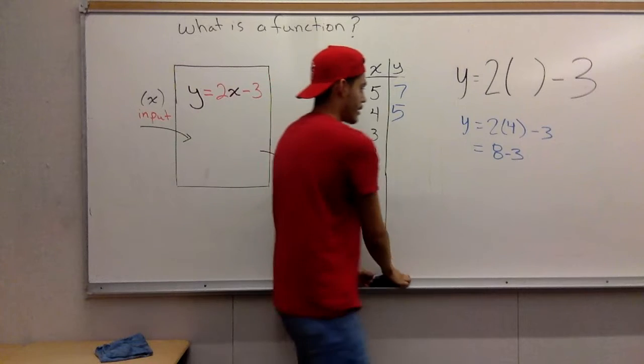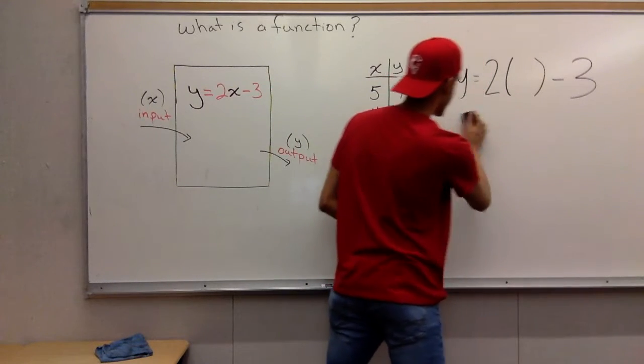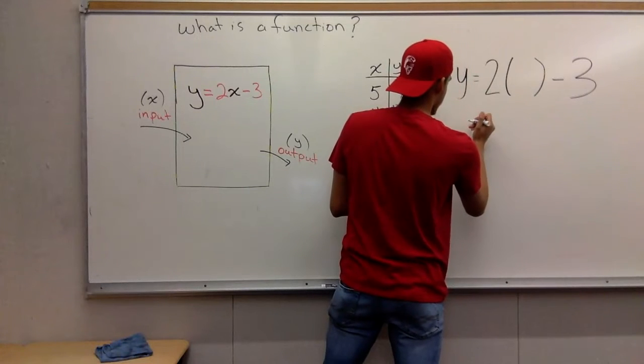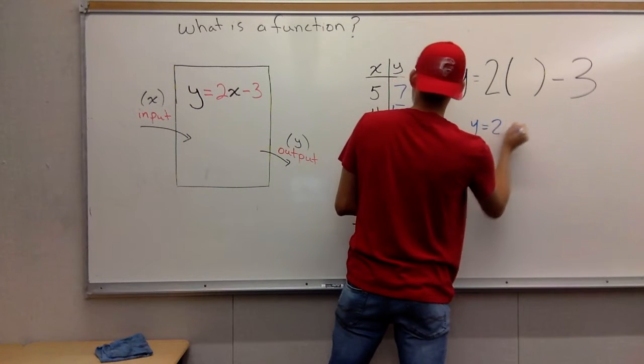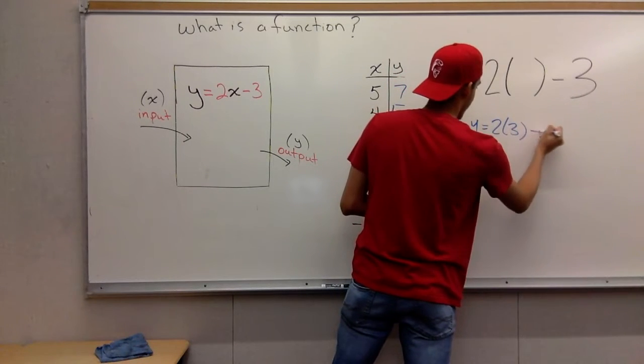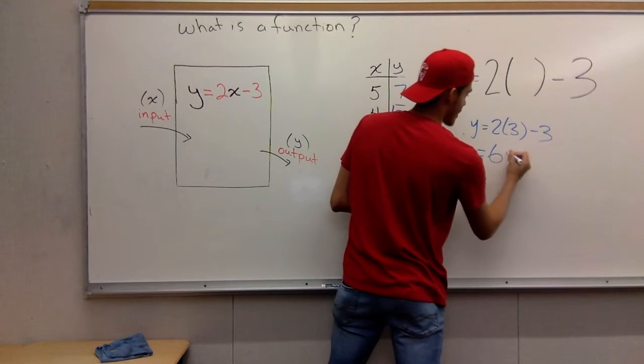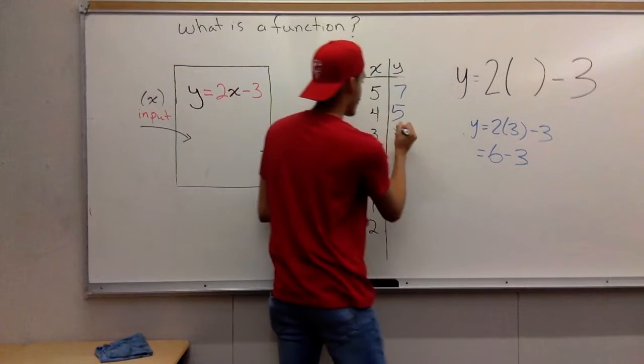All right. Now the next one, the next one is 3 right here. You have Y equals 2 times 3 minus 3. You get 2 times 3 is going to be 6. 6 minus 3, you're going to have 3.